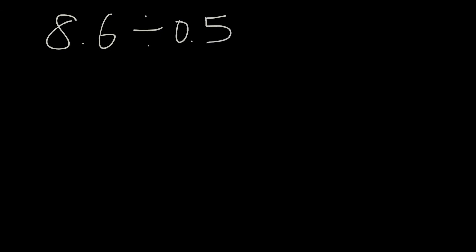The first thing to look at is the 0.5. We see that this is not a whole number. So when we write down the division, it's 8.6 divided by 0.5. When we have a divisor that's a decimal point, we need to make it into a whole number first.